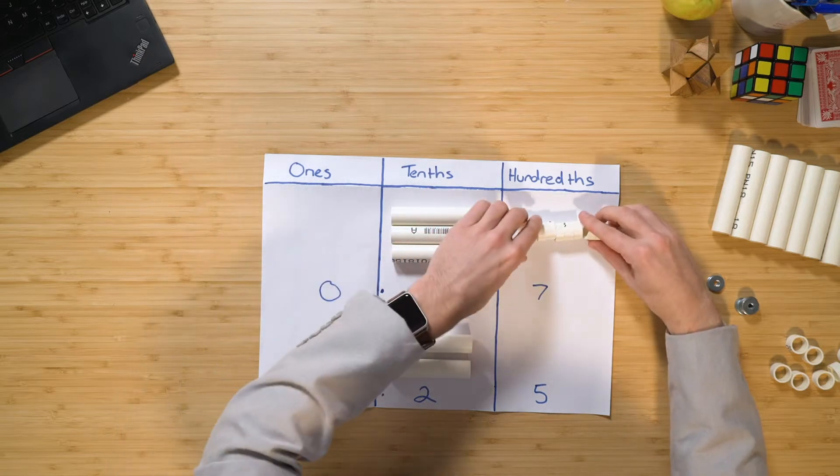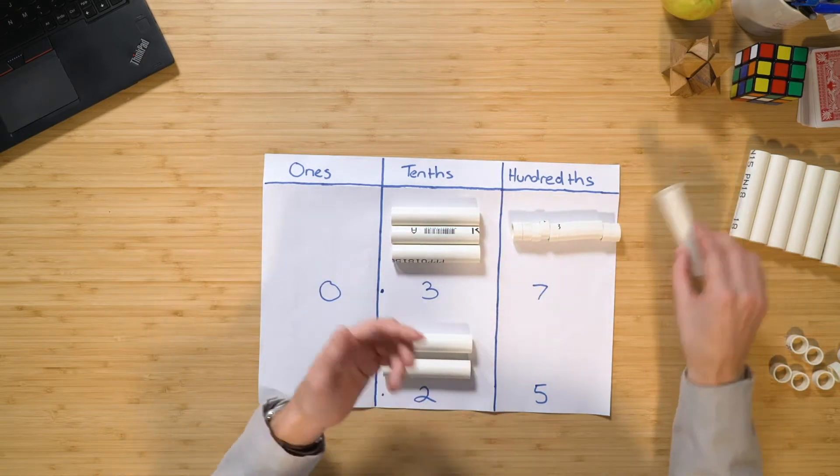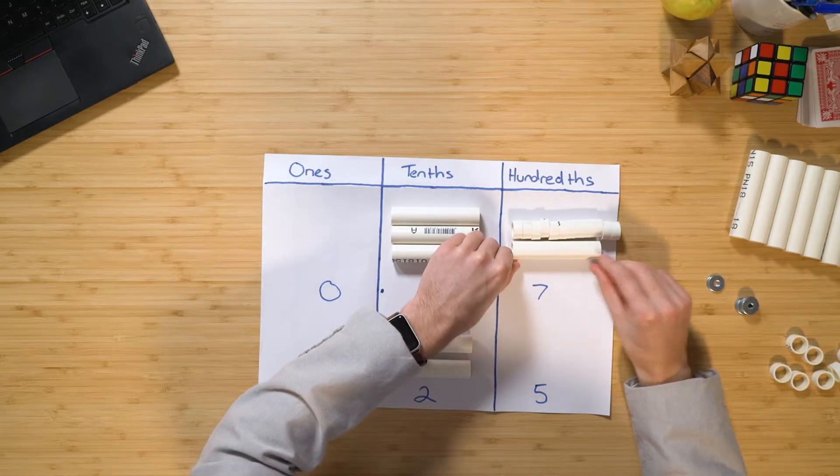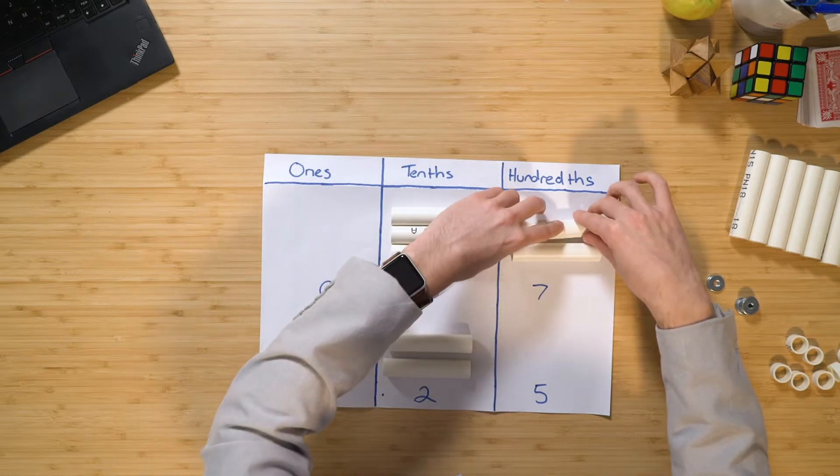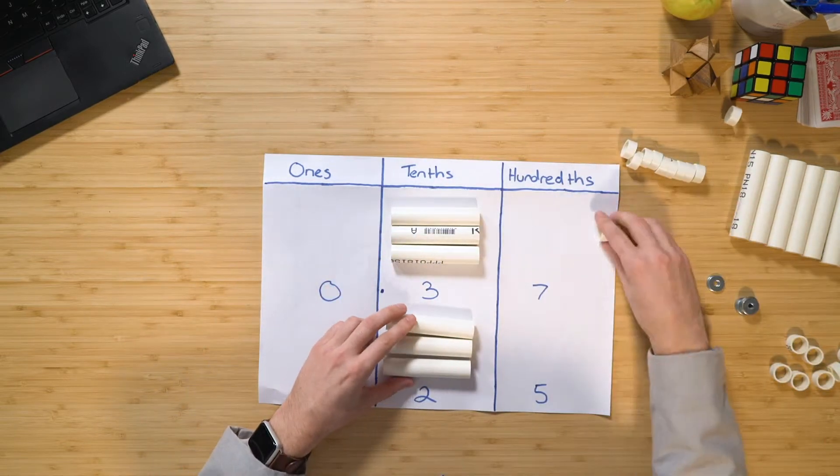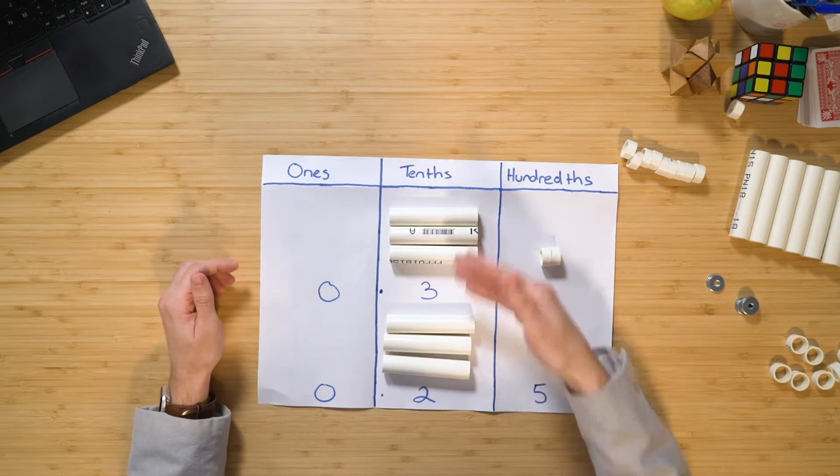Now, this is really quite straightforward when you think about it because if I just simply join these together and then I can see that I've clearly got more than one of these, don't I? So I can swap over ten hundredths for one tenth and therefore I end up getting six tenths and two hundredths or 62 hundredths. And that's as easy as that.